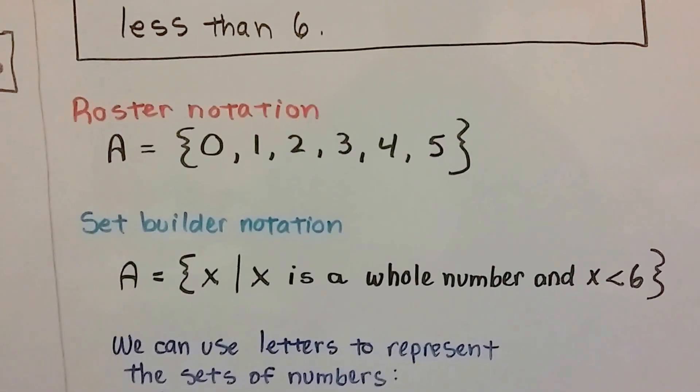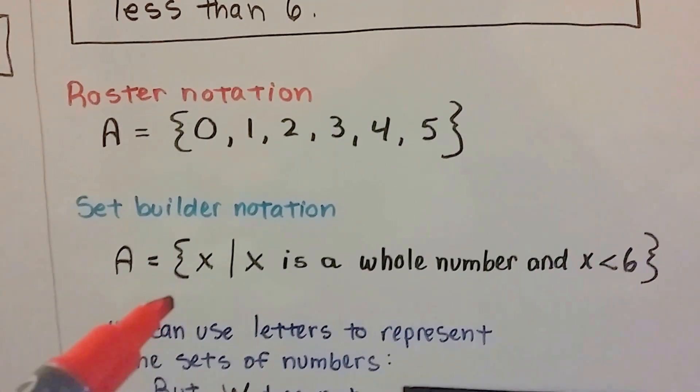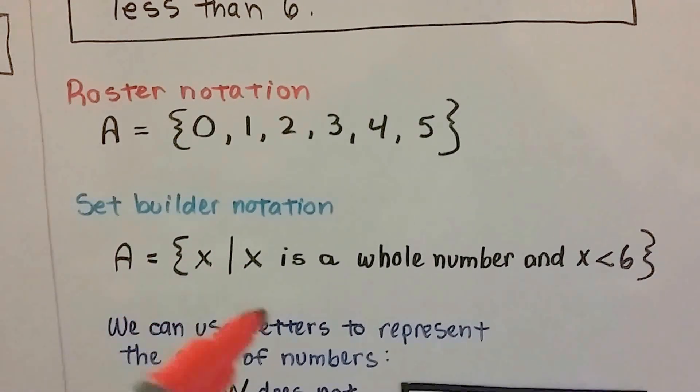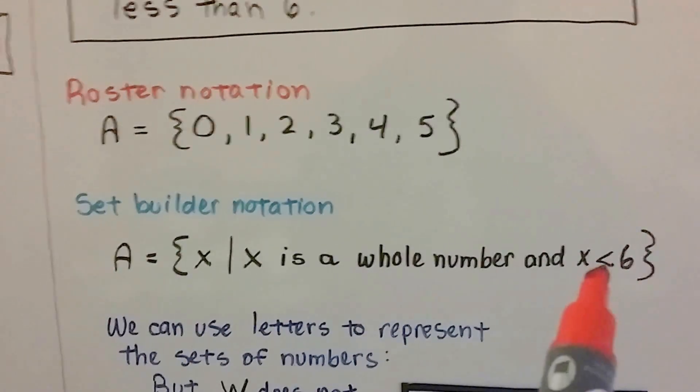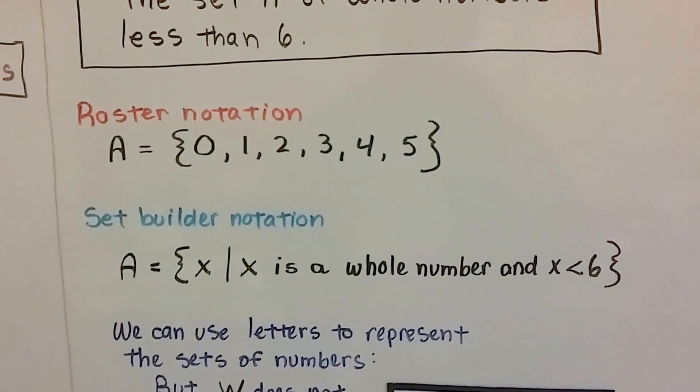Set Builder Notation, we would write A, because that's the name of the set, equals x and then the bar and then x is a whole number and x is, and then we put the less than sign and then the 6, because it's less than 6.